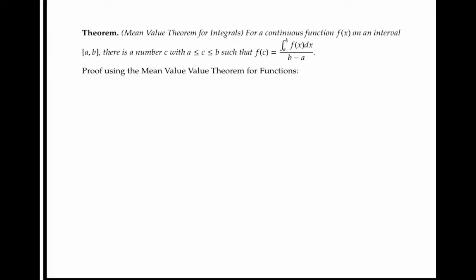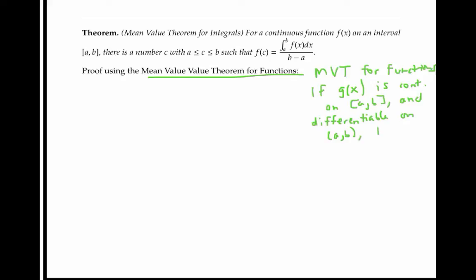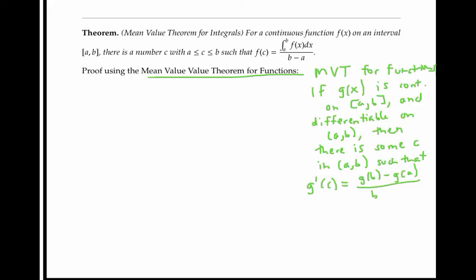Now I'm going to give a second proof of the mean value theorem for integrals, and this time it's going to be as a corollary to the regular mean value theorem for functions. Recall that the mean value theorem for functions says that if G of x is continuous on a closed interval and differentiable on the interior of that interval, then there's some number c in the interval such that the derivative of G at c is equal to the average rate of change of G across the whole interval from a to b.